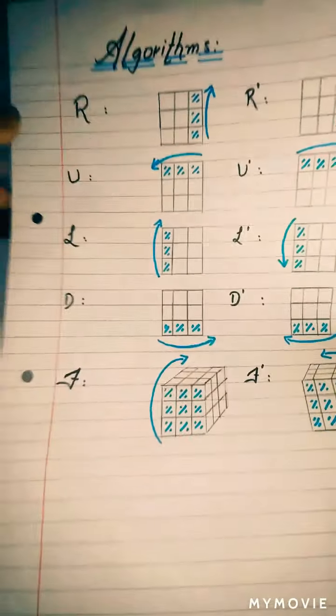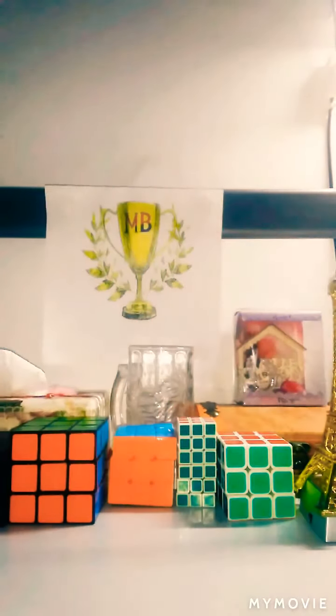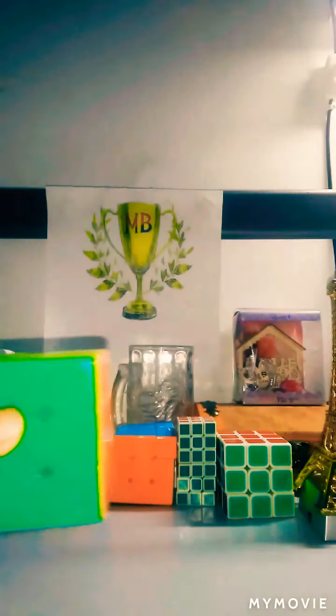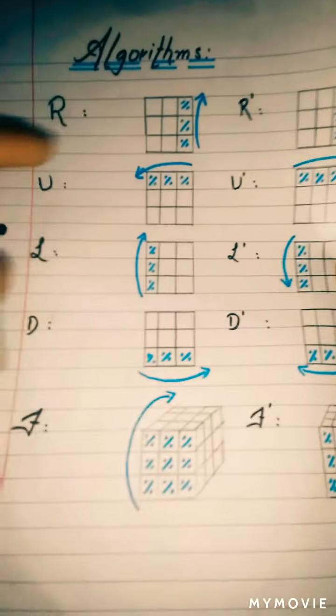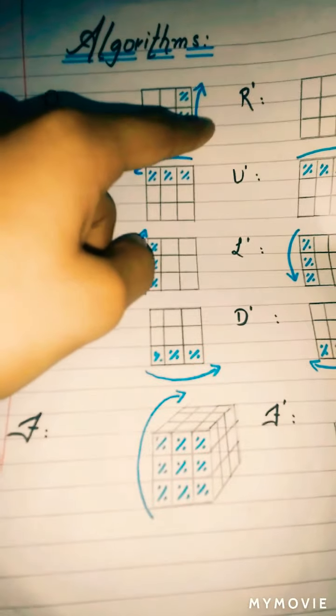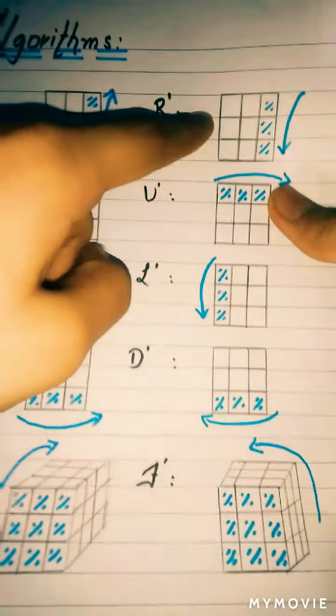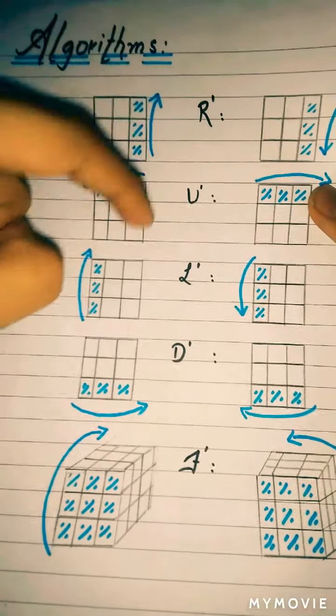First I will tell you what R is. R means moving the right layer to the left. Now see R prime — R prime is the right layer moving to the right, so R prime is the opposite of R.